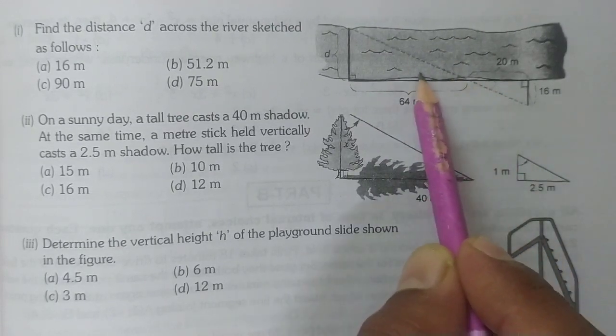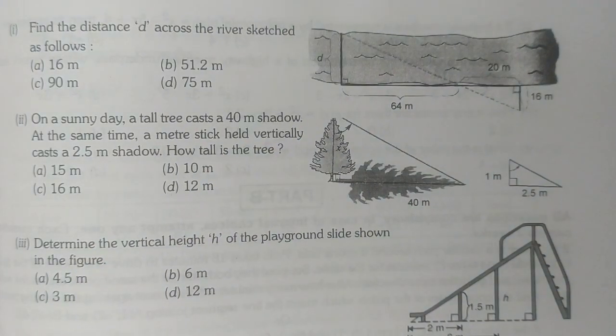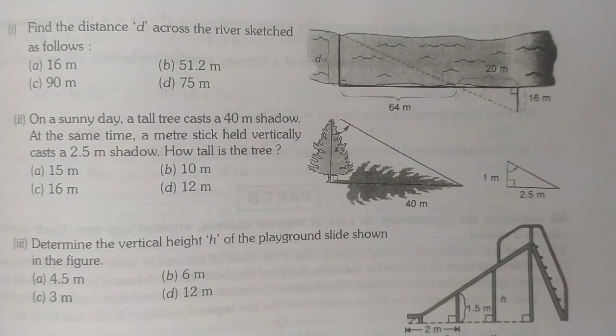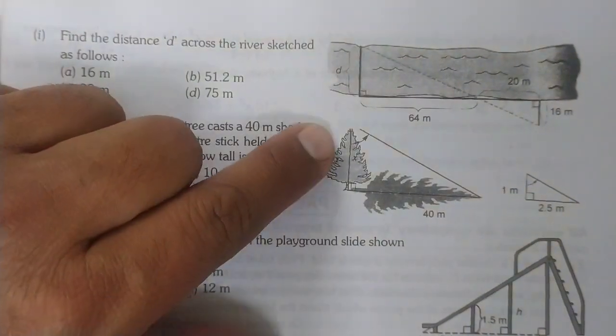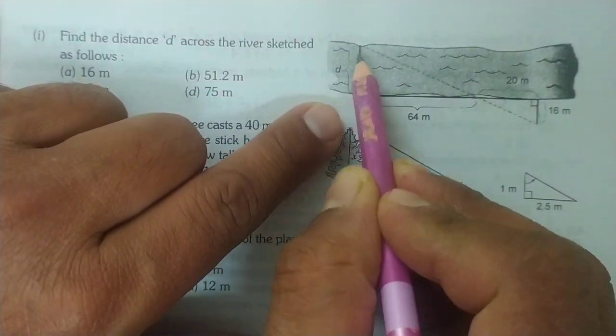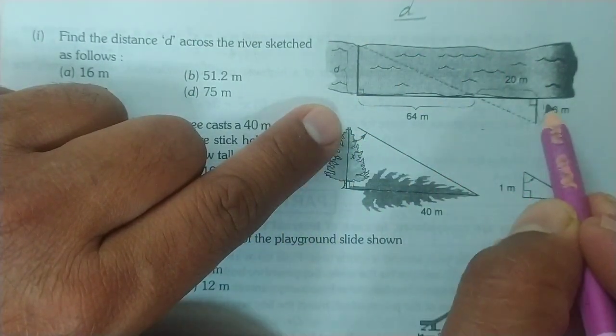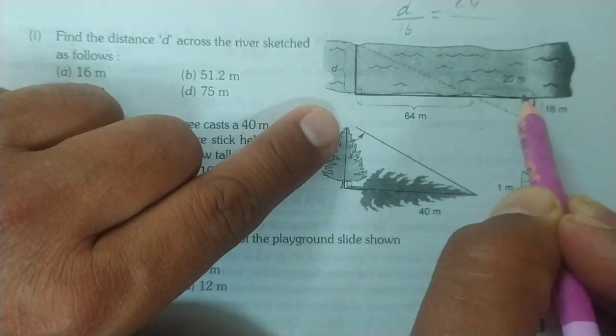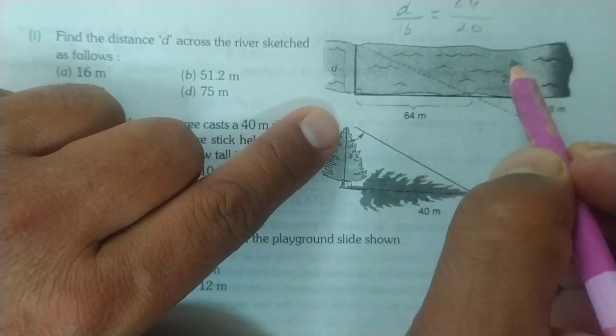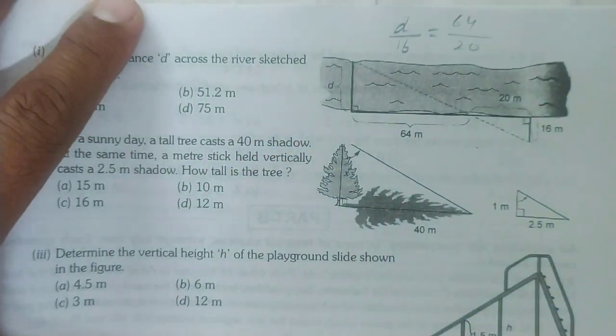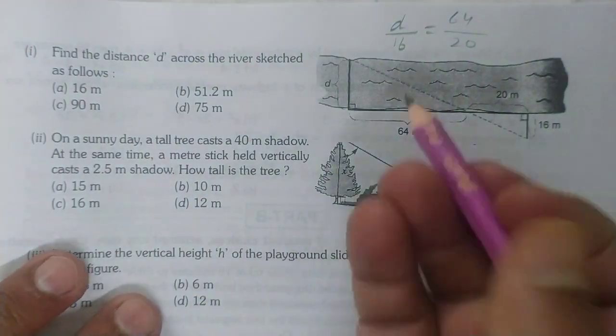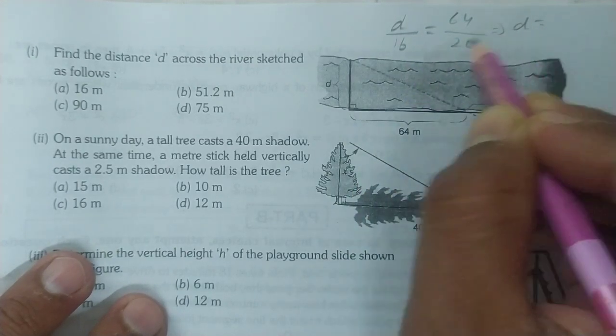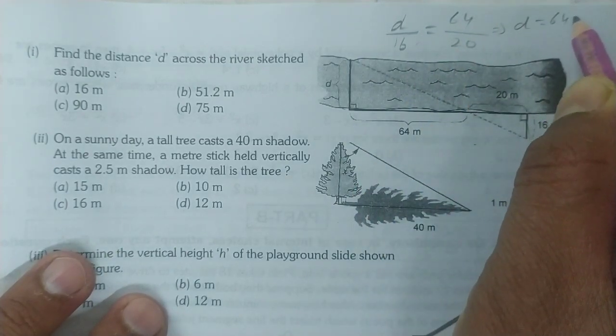These two triangles are similar, so by AA we can say these triangles are similar. If triangles are similar, we can use CPST - sides are in ratio equal. So d by 64 equals 16 by 20.